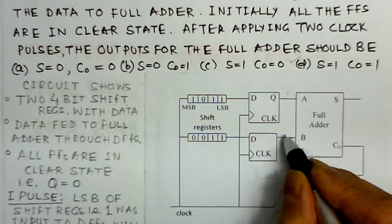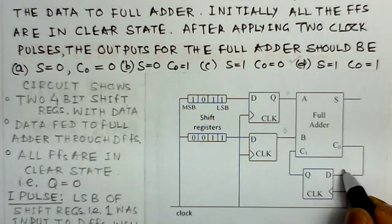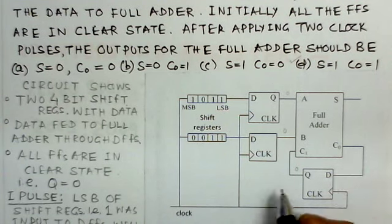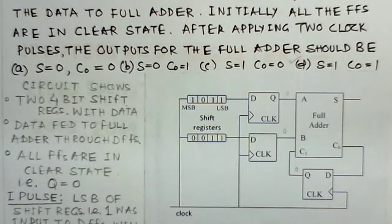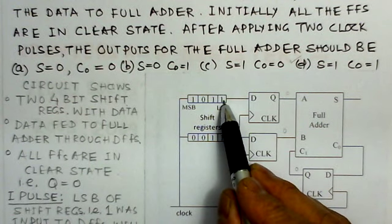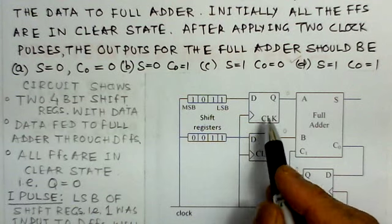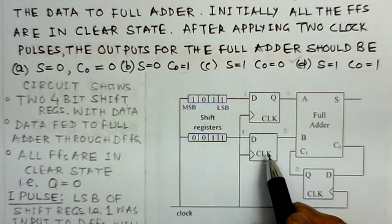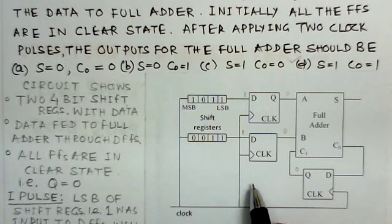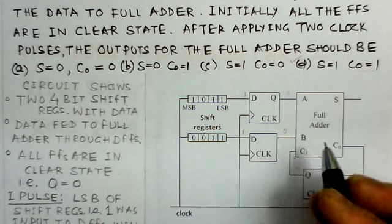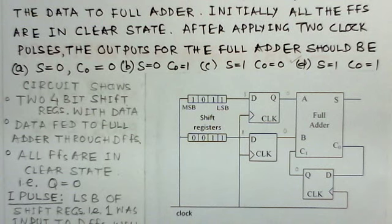Initially, all flip-flops are in the clear state, meaning they have zero output. So Q is zero for these flip-flops. Once the first clock pulse is applied, the shift register will transfer the least significant bit (LSB). This LSB — which is one — will be transferred to the A input, and another one will be transferred to the B input.